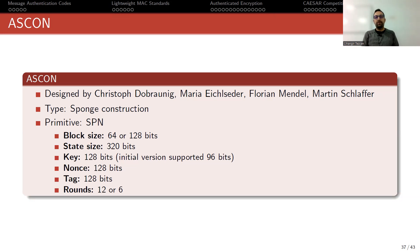It was designed by Christoph Dobrauing, Maria Eichlseder, Florian Mendel, and Martin Schlaffer. This time it is a sponge construction, not a block cipher or stream cipher, but it is based on substitution permutation networks. The permutation here just uses confusion and diffusion layers like SPN.